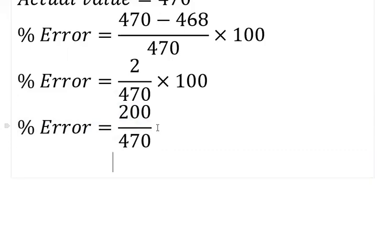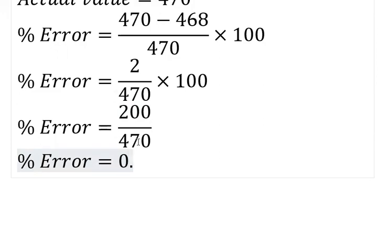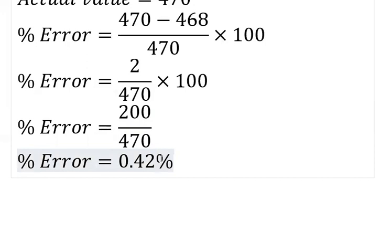So 200 divided by 470 will give you 0.42 — that is 0.42%. You can see that the percentage error of the boy's measurements is minute, very small.